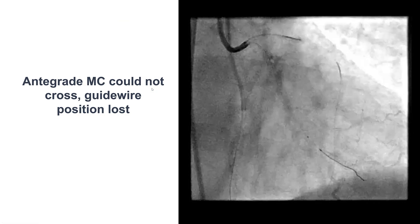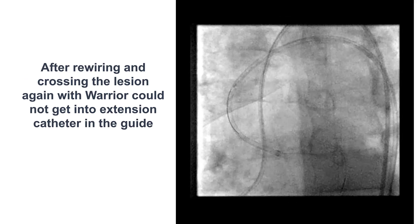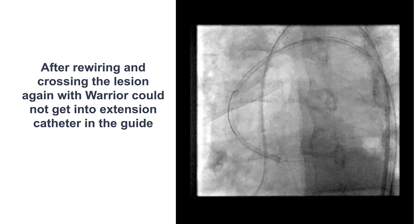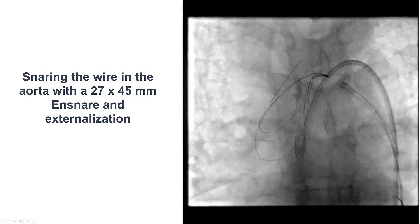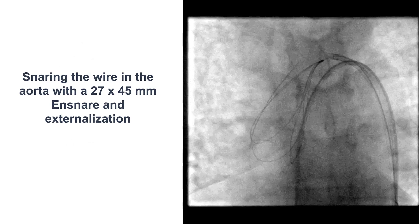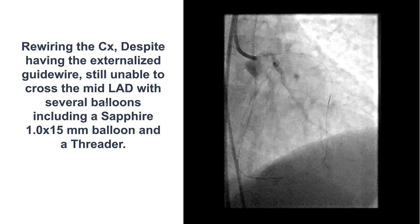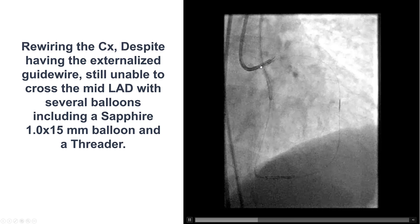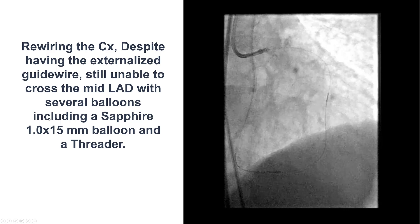After multiple attempts, we eventually lost guide wire position and had to redo the steps. We rewired, inserted the retrograde wire into the guide catheter, snared it, and externalized the wire. We thought the strong support of an externalized system would be enough to deliver equipment through, but once again we had the same problem — we could not cross the lesion in either the retrograde or antegrade direction despite using small balloons and microcatheters.